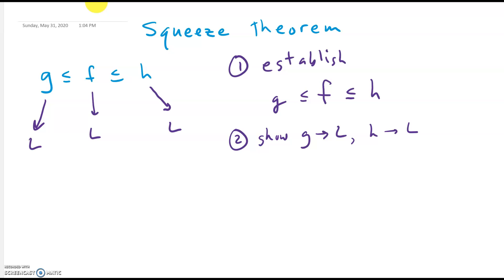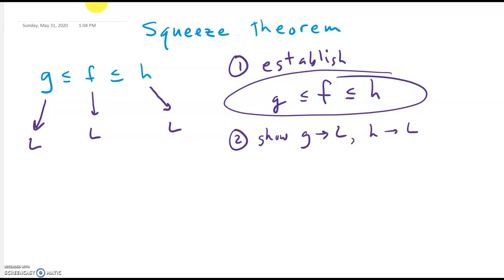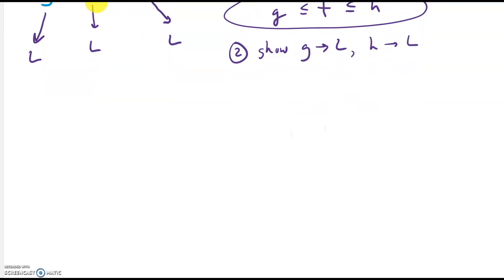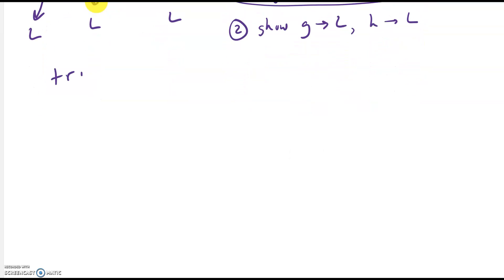Before doing an example, let's talk about the most challenging part: figuring out the inequality. Here are a couple of tricks. The first is anything involving trig — for example, sine and cosine. A basic fact is that sine and cosine are always between negative one and positive one. So if you have a sine or cosine somewhere in your function, that's usually a good starting point.